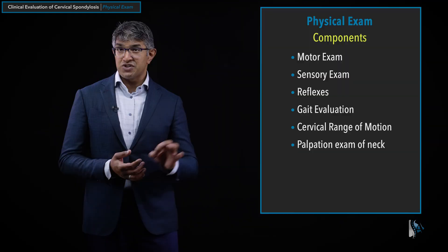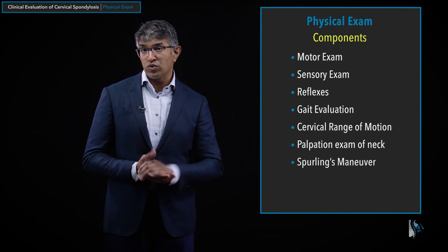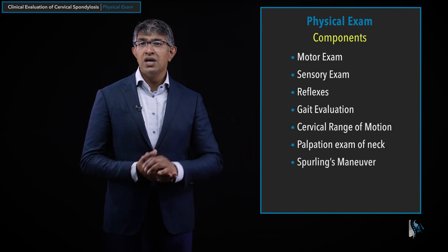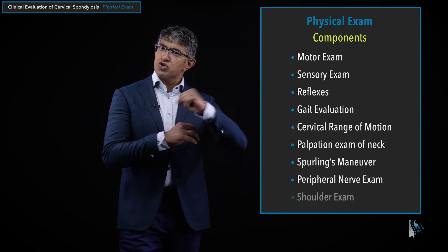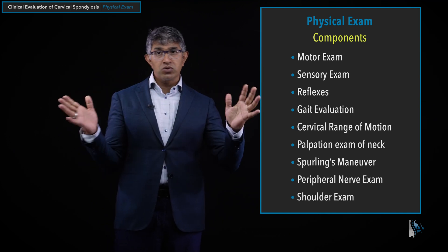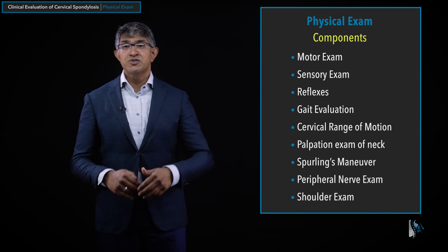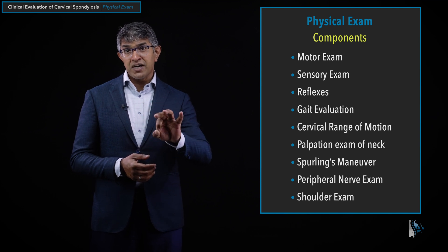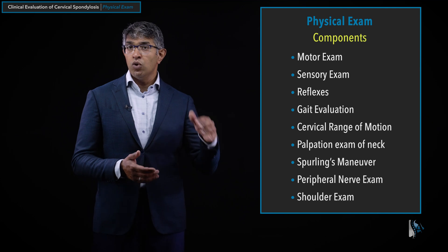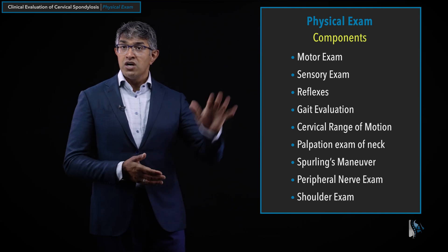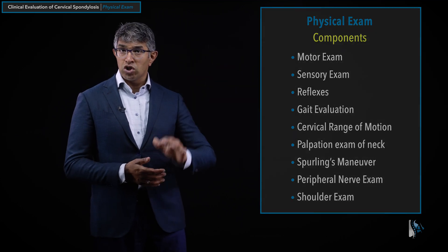I look for a couple of very important things in select patients: a Sperling's maneuver, a peripheral nerve exam, and a shoulder exam. I won't get into the shoulder exam in this video, but it's important for a spine surgeon to know how to do a good shoulder exam when evaluating a patient with neck complaints, or a hip and knee exam when evaluating somebody for the lumbar spine.